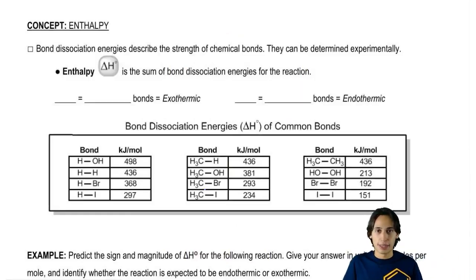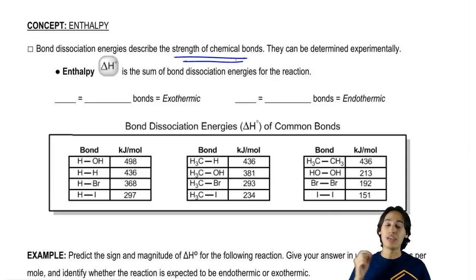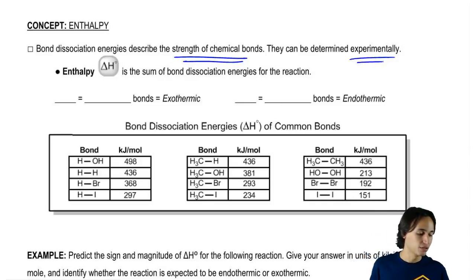So bond dissociation energies are values that are going to describe the strength of chemical bonds. Now in chemistry courses that are way beyond the level of this course, organic chemistry, we actually can use math to figure out exactly why two atoms have the exact strength of bond that they do. But in this course, you're never going to be asked that. You're never going to be asked to explain why the bond between H and H is 436 kJ per mole. So these are going to be basically experimental values that you're going to be given that you're going to use as reference to just figure out one question: is this going to be an exothermic reaction or is this going to be an endothermic reaction?